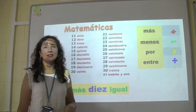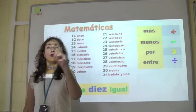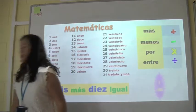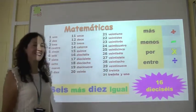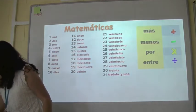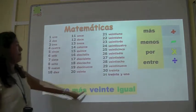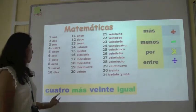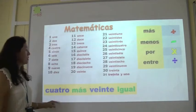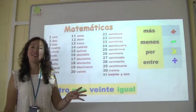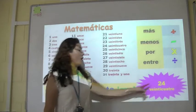Sixteen! How do we say sixteen? That's a hard number — dieciséis. Next: cuatro más veinte — four plus twenty. Veinticuatro! Cuatro más veinte igual veinticuatro. Muy bien!